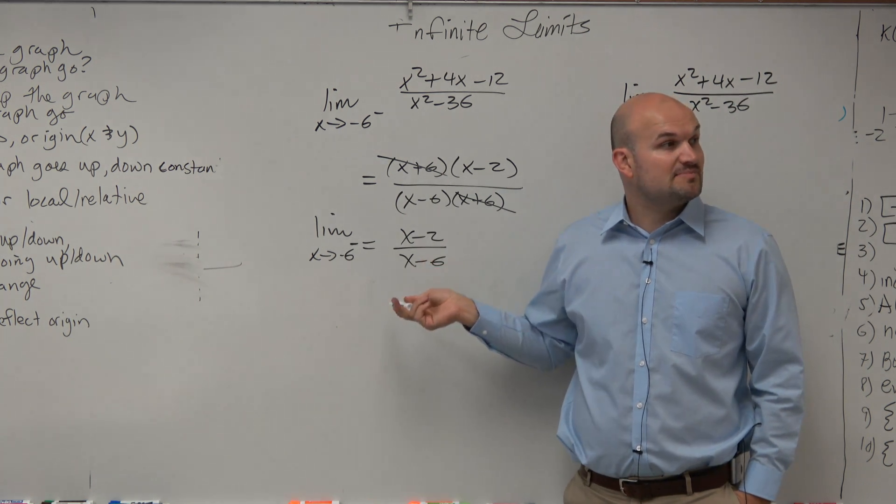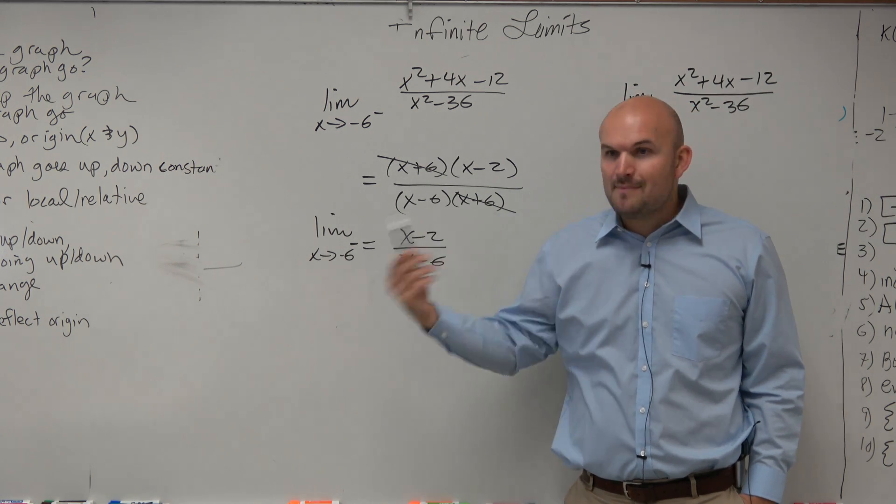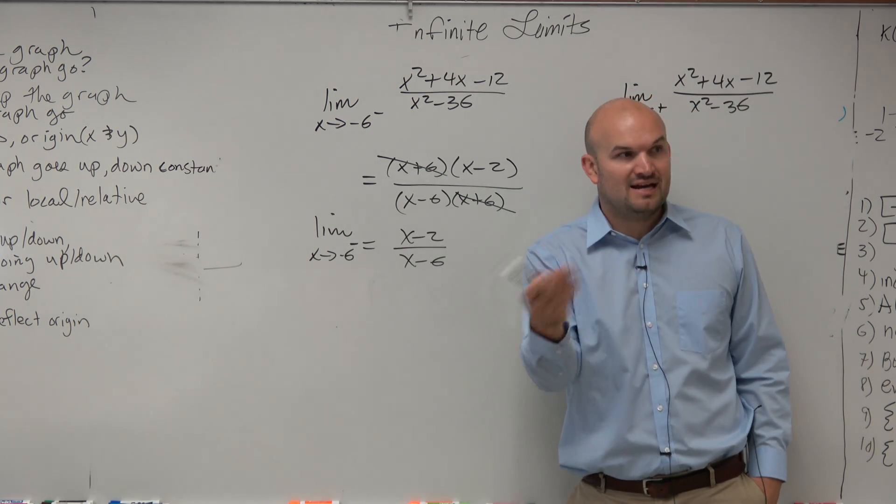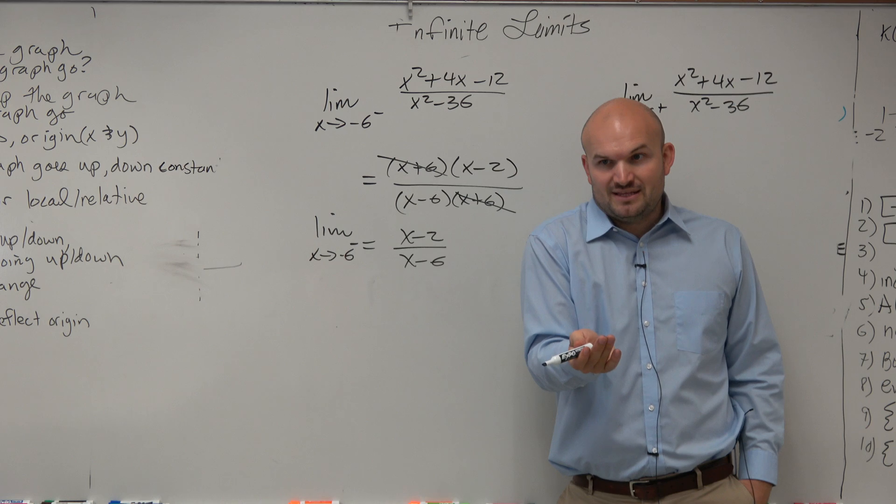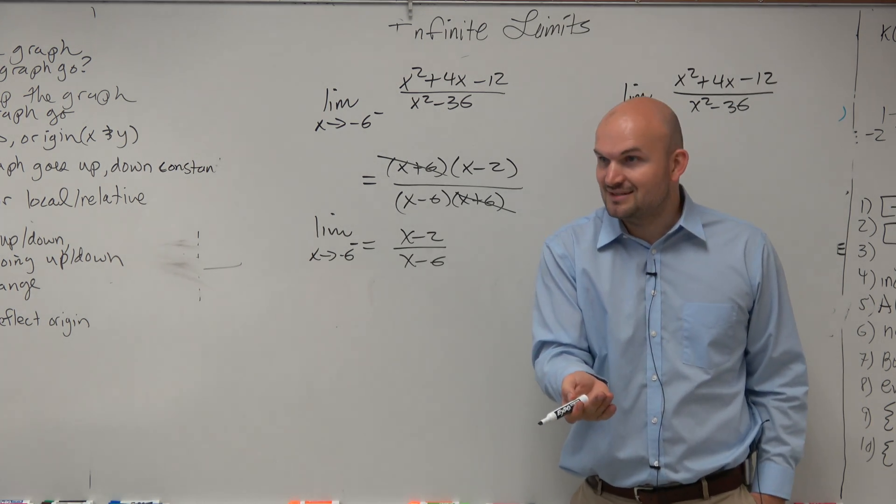Does negative 6 make this function go to 0? The denominator goes to 0. No, so it's continuous. So what happens when we have a continuous function at a value? We need to find the limit. We just plug it in. That's it. Plug it in.